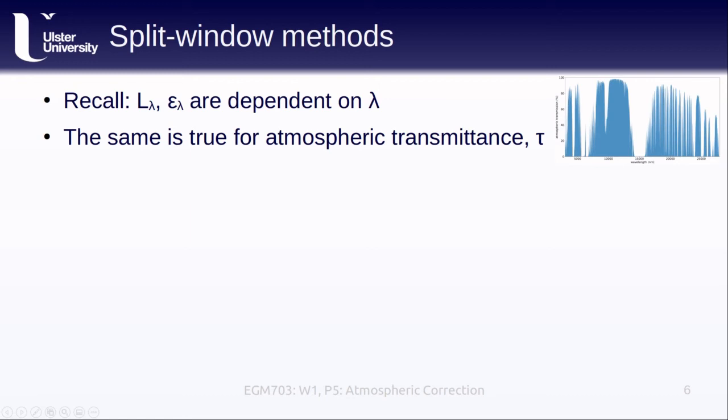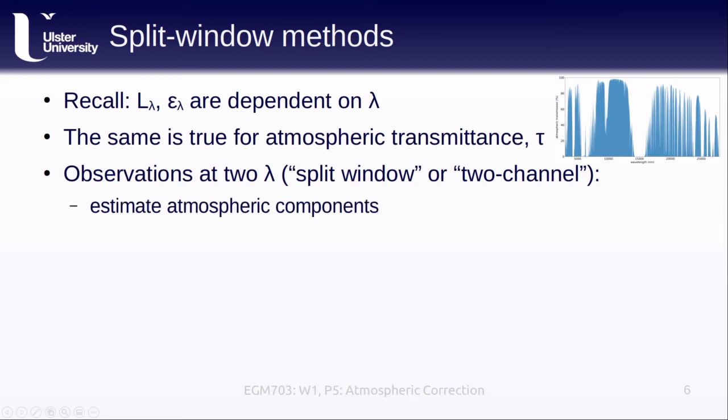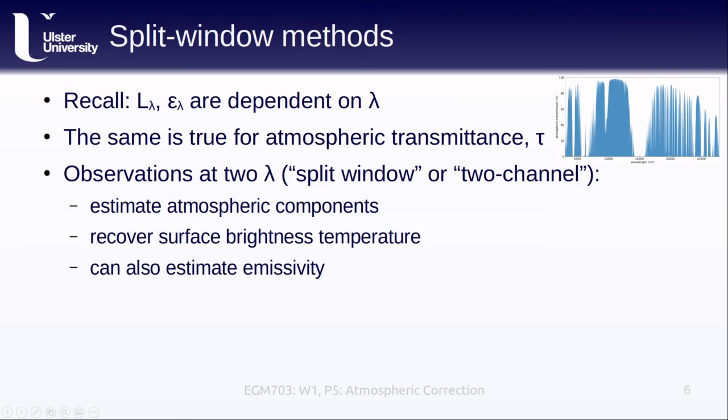What this means is that if we have observations at two different wavelengths or wavelength bands, then we can estimate the atmospheric components of the radiative transfer equation, recover the surface brightness temperature, and estimate the emissivity.